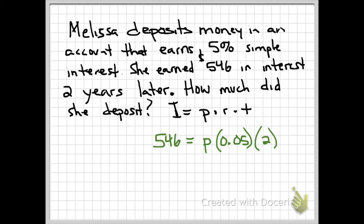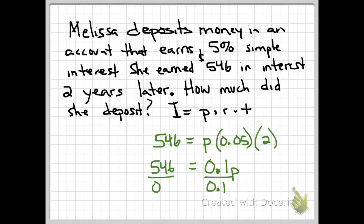People who say we don't use algebra in real life — here's a prime example. We multiply 2 and 0.05, giving us 0.1, times the principal we're looking for, equals $546. So we divide both sides by 0.1: $546 divided by 0.1 gives us $5,460. That's how much she initially put into her account.